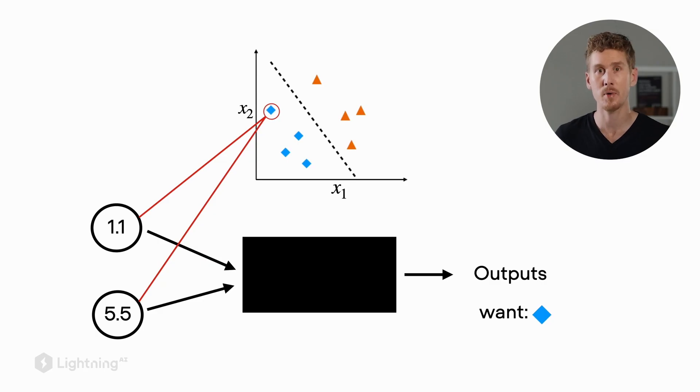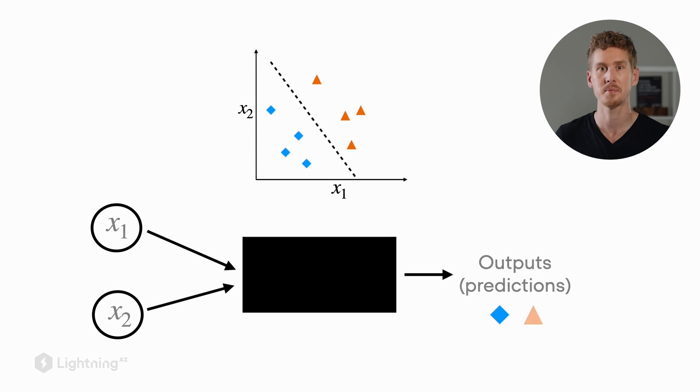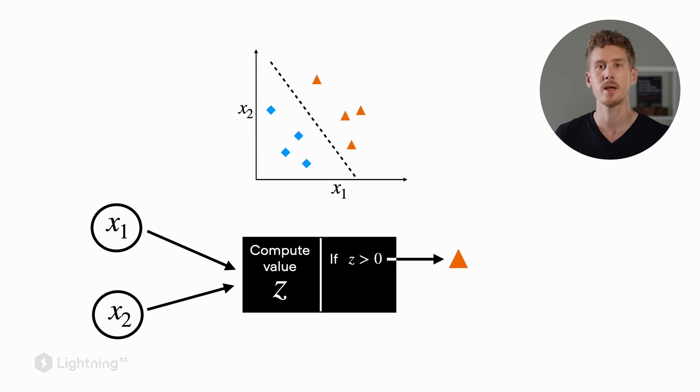Now let's take a look at this black box and see what happens inside. So inside the perceptron computes a so-called z-value, which we also sometimes call the net input. We will define how this is computed later, but for now consider we are given this value z, and then we apply a threshold to it. So we say if z is greater than zero, predict this orange triangle. Otherwise, if z is smaller or equal to zero, then we will predict this blue diamond. And this is essentially our decision rule. We have the z-value and we apply a threshold to it.